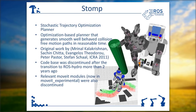So, what is STOMP? STOMP stands for Stochastic Trajectory Optimization Motion Planner. As its name suggests, it's an optimization-based planner which can generate smooth, well-behaved, collision-free motion paths within reasonable time. The original work was done by Mrinal Kalakrishnan and Sachin, among several other contributors, back in 2011.